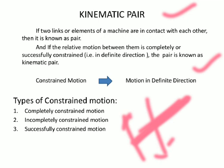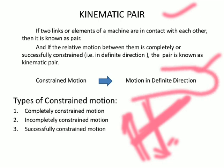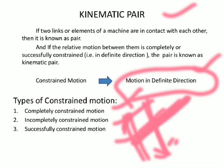If a pair continues in an up-and-down or constrained motion in a definite direction, it is a kinematic pair. Constrained motion is divided into three parts: completely constrained, incompletely constrained, and successfully constrained motion.